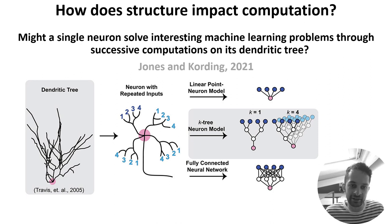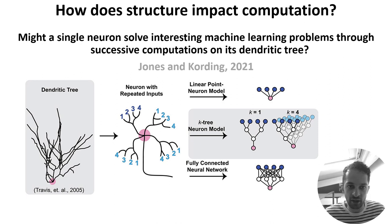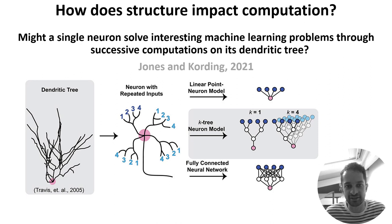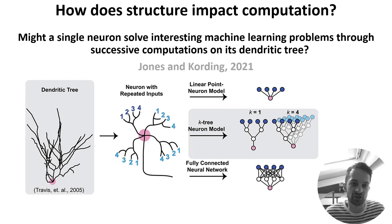As a lower bound, they use a linear point neuron model, and as an upper bound, they use a fully connected neural network with the same number of trainable parameters. What they conclude is that the performance of their tree model improves as you increase k, the number of repeated sub-trees, but starts to degrade when you make the trees more realistic by making them asymmetrical. That suggests there's still lots to explore in exactly how structure impacts computation. Okay, so that's all for neuron structure. In the next video, we'll move on to neuron function.